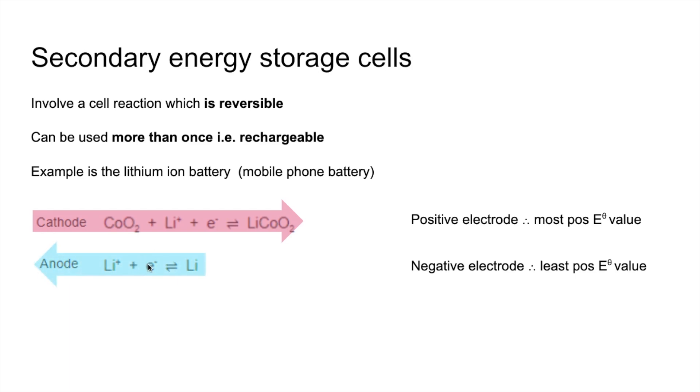Quick look at the electrons, you can see we've got one in each half cell, so we don't need to multiply these out. So the overall cell reaction as the cell operates, or discharges, is the sum of those two half equations. So cancelling out like terms, we end up with CoO2 plus lithium going to LiCoO2.